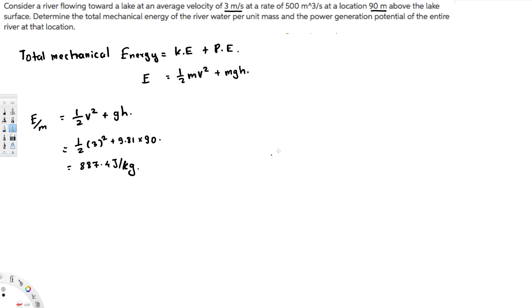And the second question is asking the power generation potential of the entire river at that location. So we have to calculate power. To calculate the power we can use this equation: power is equal to energy per unit mass, so that's E over m, times volume flow rate.